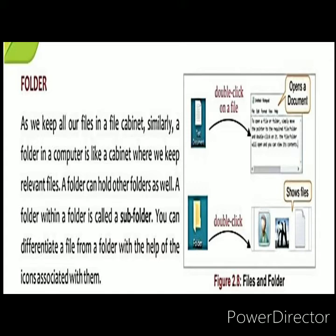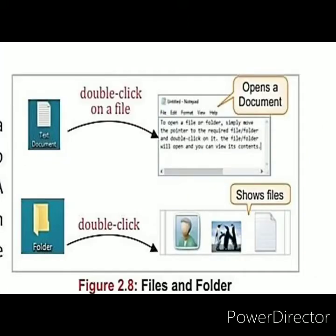You can differentiate a file from a folder with the help of the icon associated with it. Look at the diagram. The first one is a text document — that is a file. The second one is a folder, shown in yellow color. If you want to open the document, you have to double-click on the file and it will open in Word. If you want to open the folder, you double-click on that folder and it shows all the files included in that folder.